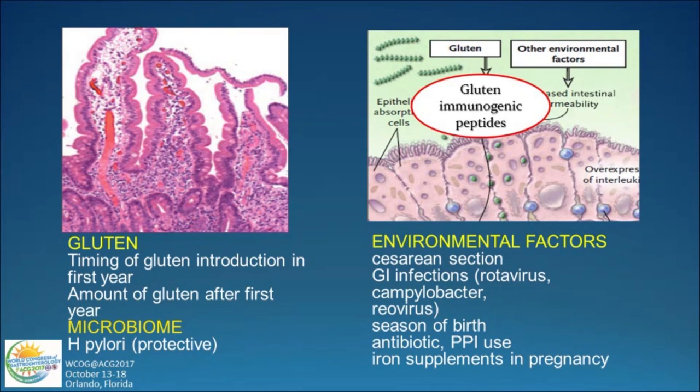When we eat meat, our peptidases chop up meat protein to amino acids, dimers, and trimers. But in celiac disease we're left with these gluten immunogenic peptides.